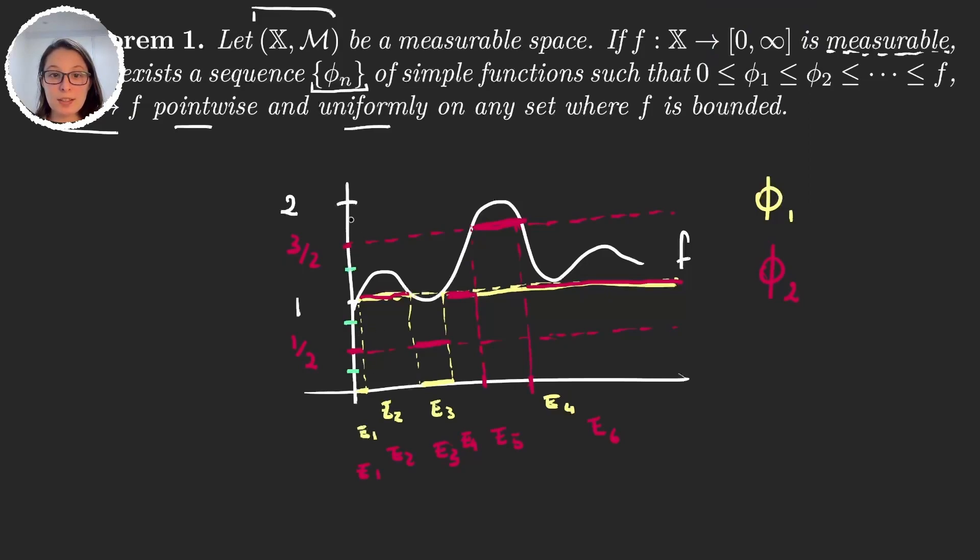But you can see that in the next step we would have to divide everything by one half again and do the exact same thing. But this drawing is going to be way more complicated, so I'm just going to stop it there. You can follow building φ₃ and so on. This family of simple functions is very easy to see that they will converge pointwise to f and uniformly where the function f is bounded.